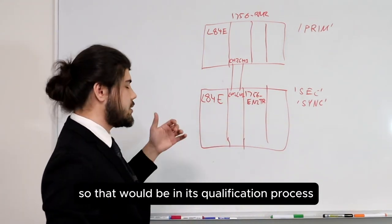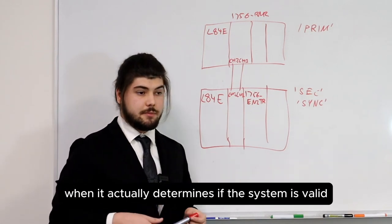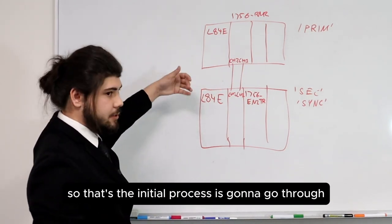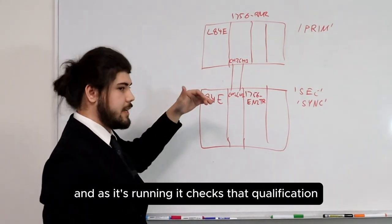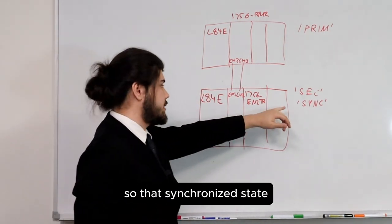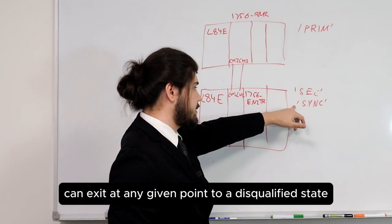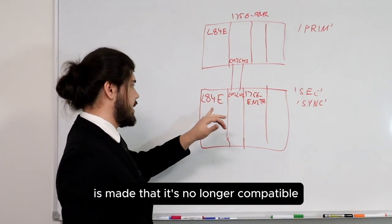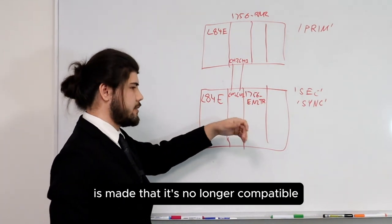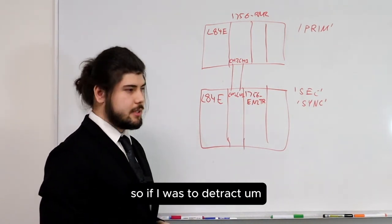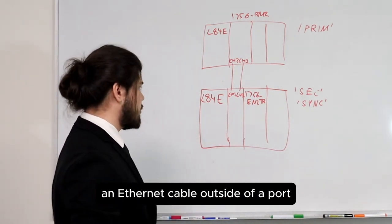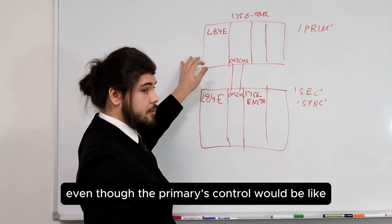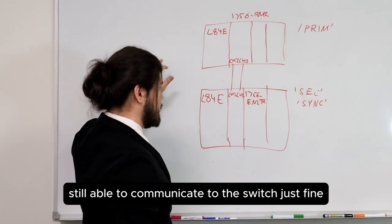When the system takes over it's expecting all of the hardware to be identical, and if nothing is plugged in it can't simulate and replicate nothing. That is part of its qualification process — when it determines if the system is valid to form a synchronized pair. As it's running, it continuously checks that qualification. The synchronized state can exit at any given point to a disqualified state as soon as it detects it's no longer compatible. For example, if I were to detach an Ethernet cable from a port, it would lose its ability to replicate that system, even though the primary control would still be able to communicate to the switch just fine.